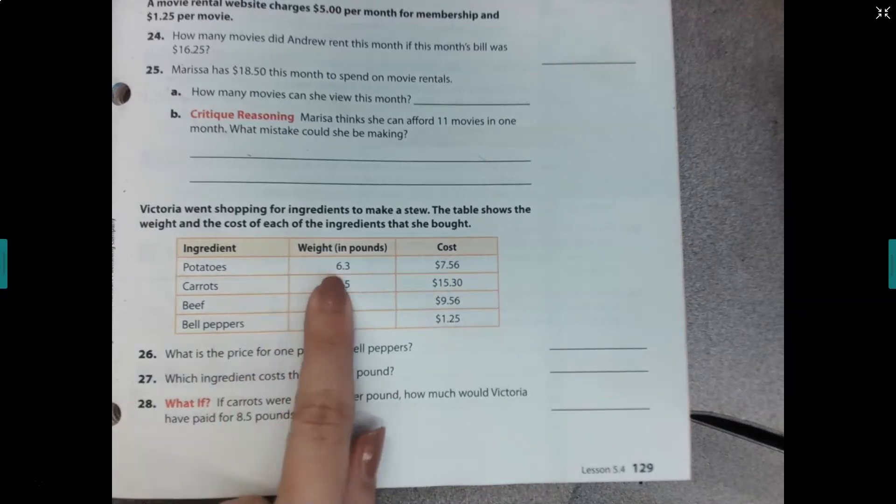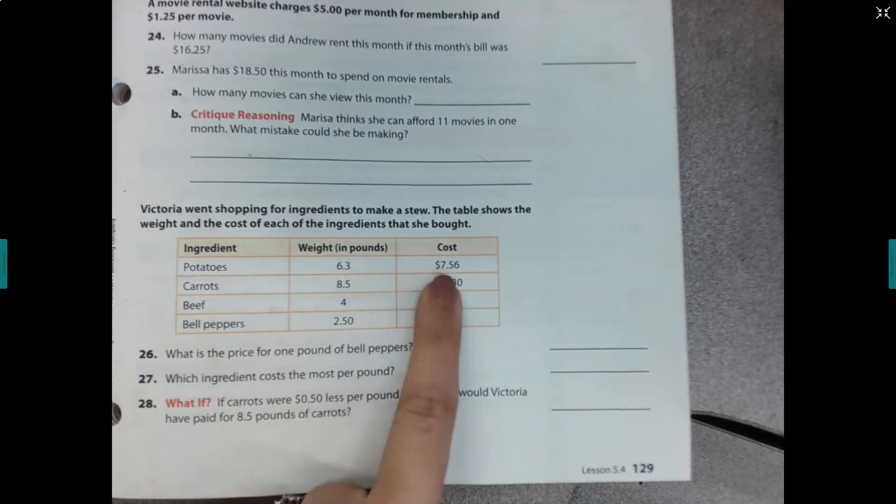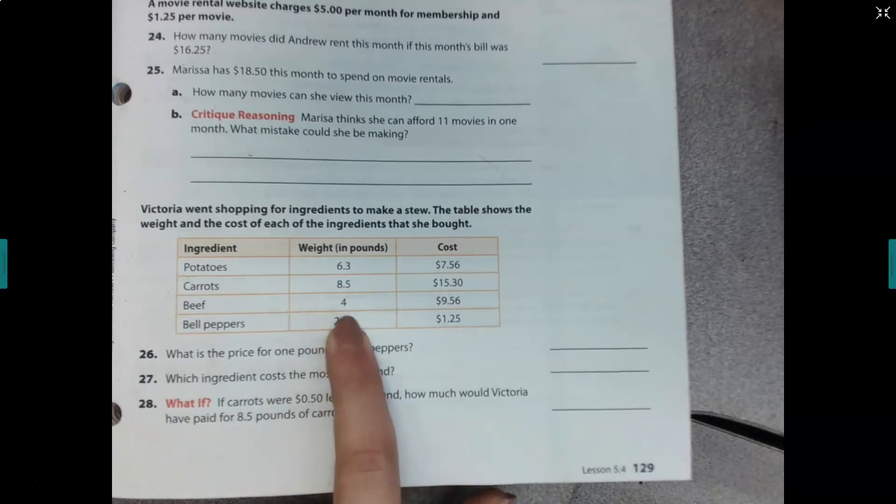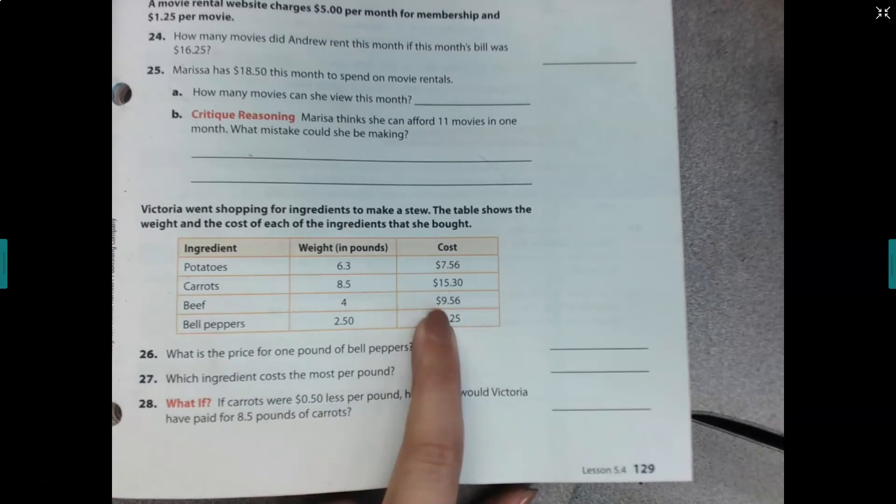So much like the first question, we're thinking about cost per pound. So if I know that the potatoes were 6.3 pounds and they cost $7.56, then I am going to have to figure out the cost for just one pound. So let's figure out the price per pound of the beef. So I've got four pounds of beef, and it costs $9.56.